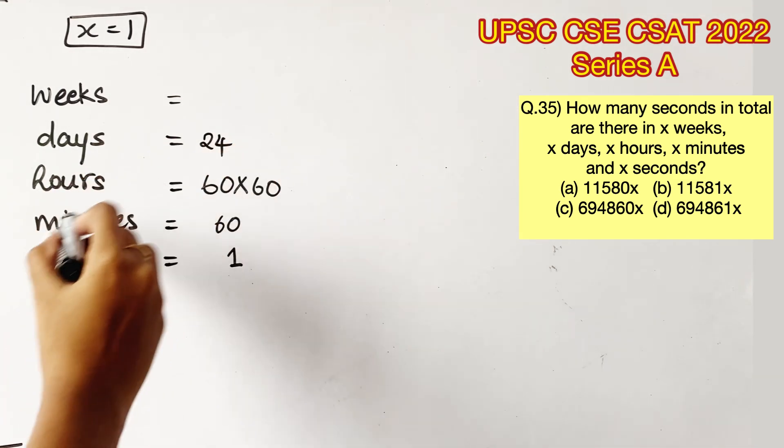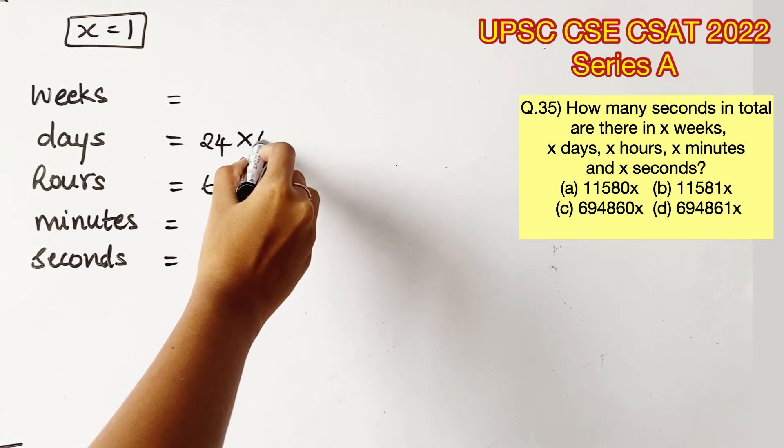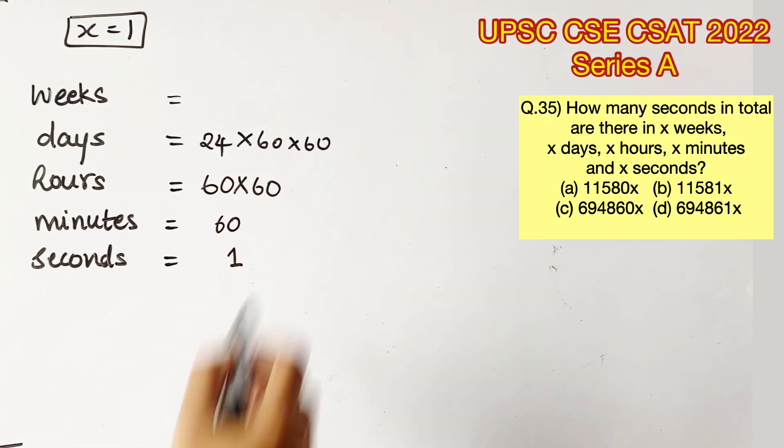How many seconds are there in 1 day? So there are 24 hours in a day and in an hour there is 60 into 60 seconds.